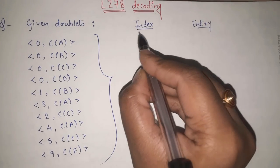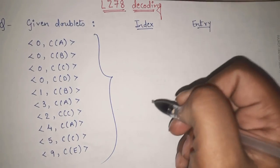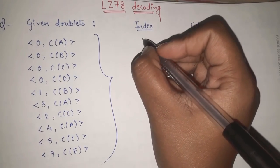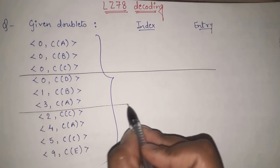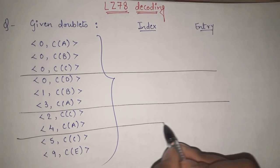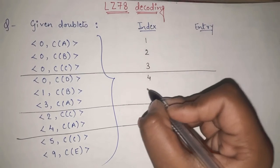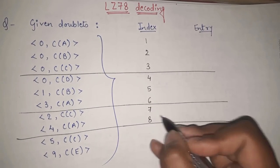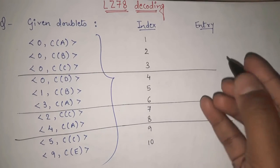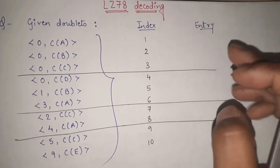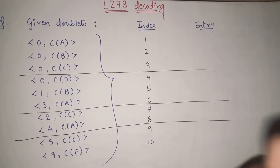As we have seen in encoding, the first thing that we need to do — index is nothing but the serial number. So let me write index here and let's divide it for our convenience. So let's write index serially 1, 2, 3, 4, 5, 6, 7, 8, 9 and 10. So these are the indexes. Now we have to calculate the entry accordingly, and at the end the concatenation of my entry column will become my whole message or my answer.